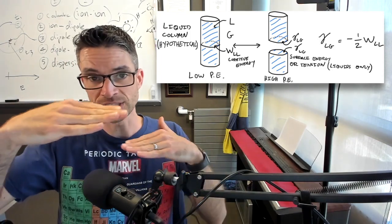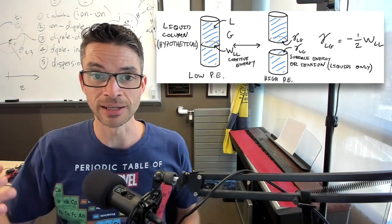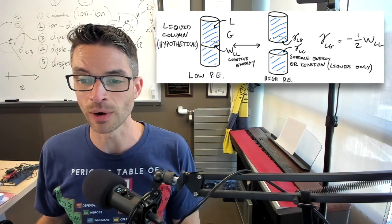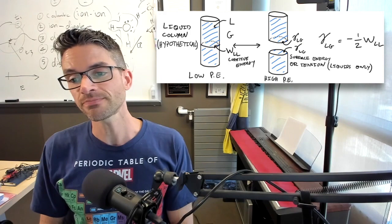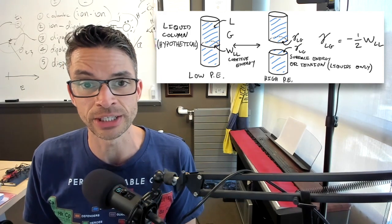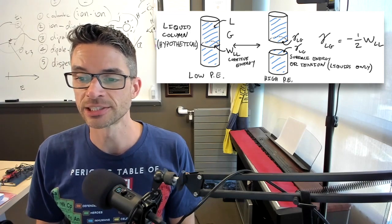And then what you're left with is two surfaces in contact now with the gas phase or the vacuum phase. And now the energies on either side of that column are the surface energy. So that is one half of the work of cohesion.